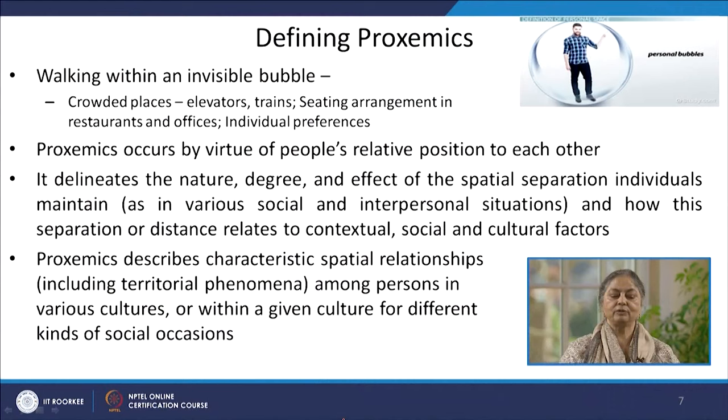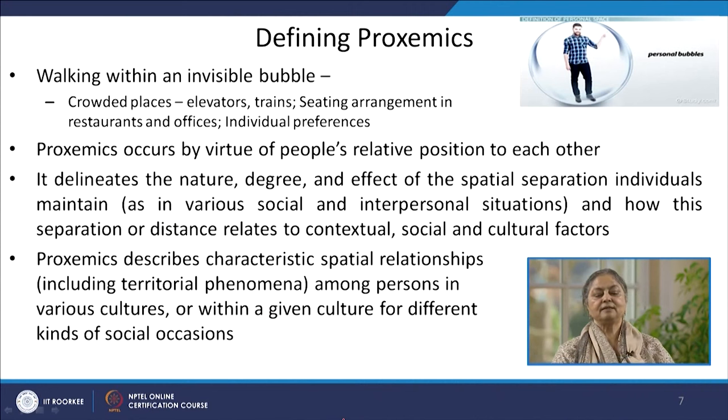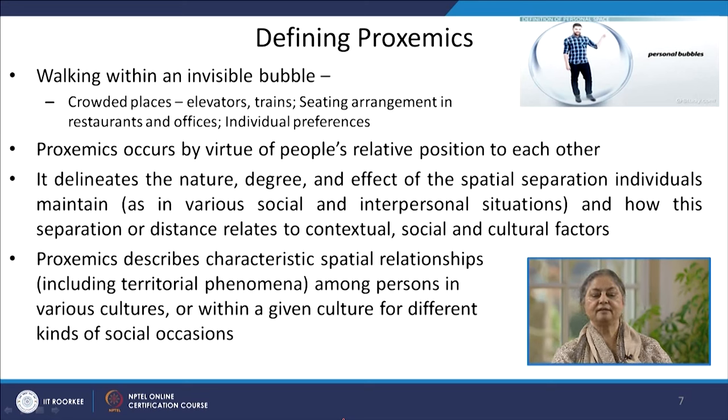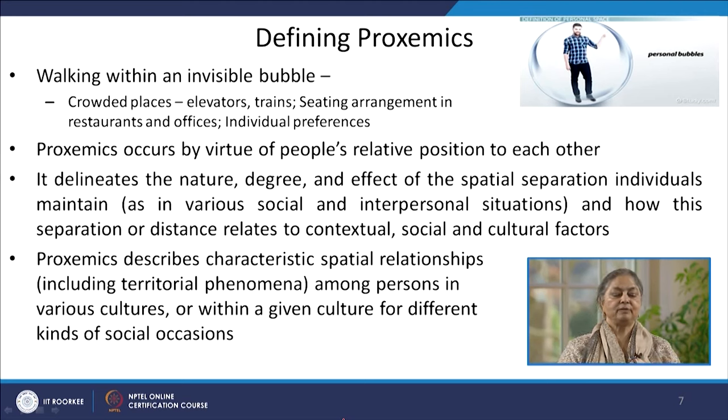The same happens when travelling in a train, bus, or any other automobile where people not known to us share the same space. We develop a body language which suggests we do not want to be close to them. Proxemics occurs by virtue of people's relative position to each other, and we also try to keep this invisible bubble intact. Proxemics also describes characteristic spatial relationships including territorial phenomena among persons in various cultures or within a given culture for different kinds of social occasions.